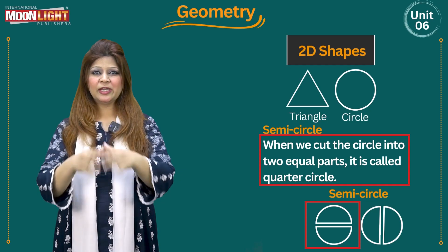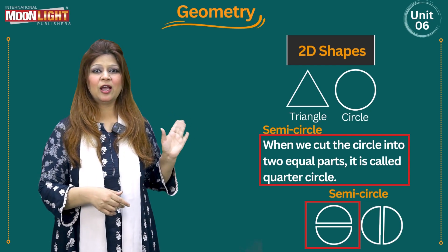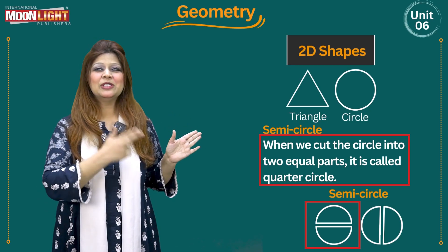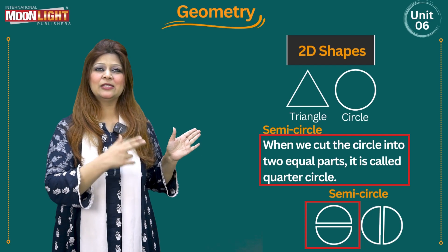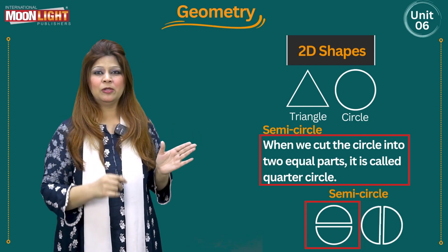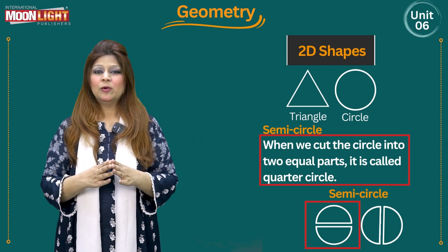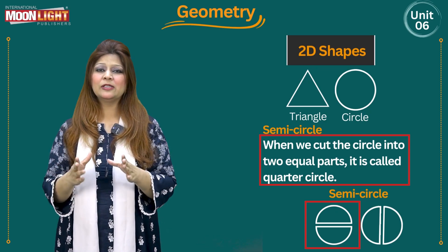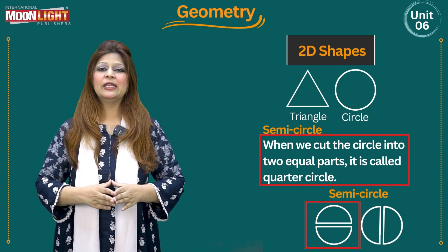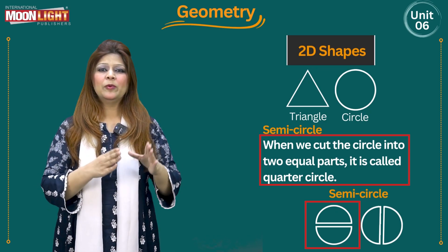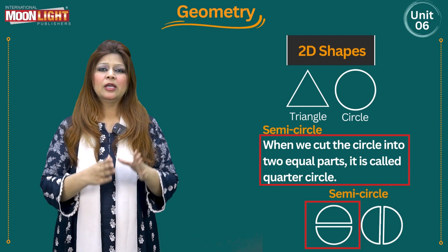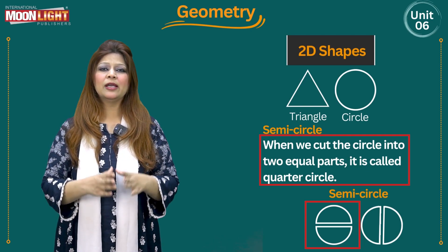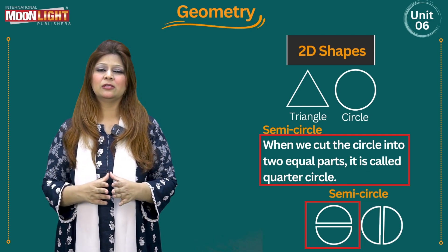So right now you can just check this figure out. This figure is again a circle figure. This circle is divided into two equal parts. When the circle is divided into two equal parts — or in other words, when we cut the circle into two equal parts — it is called a semicircle.